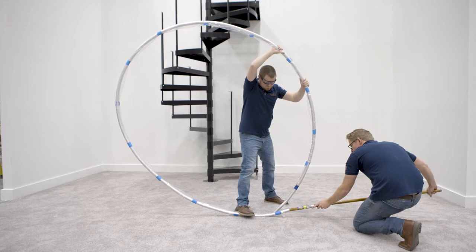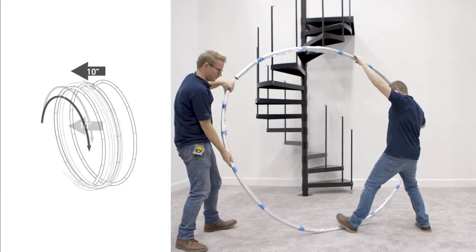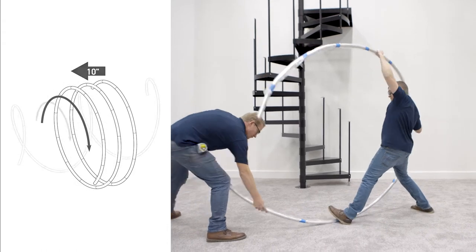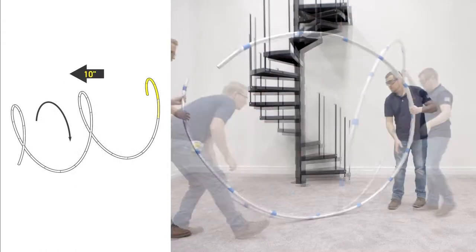Be sure to avoid flat spots. Step 38. The handrail should be expanded by approximately 10 inches at each tape mark until it is a smooth helical shape.